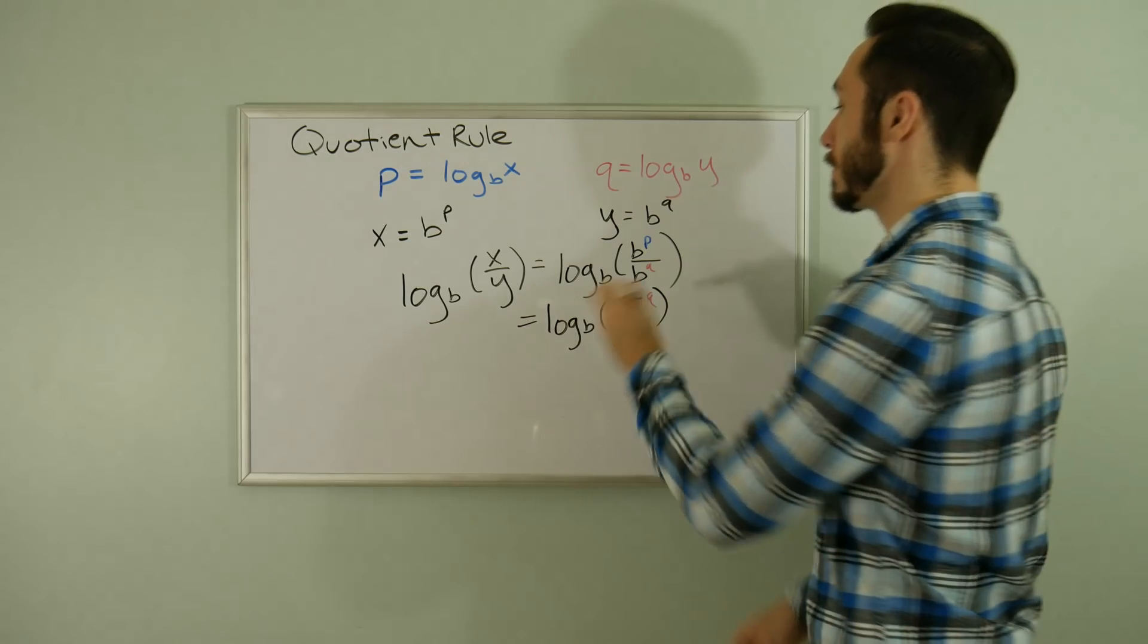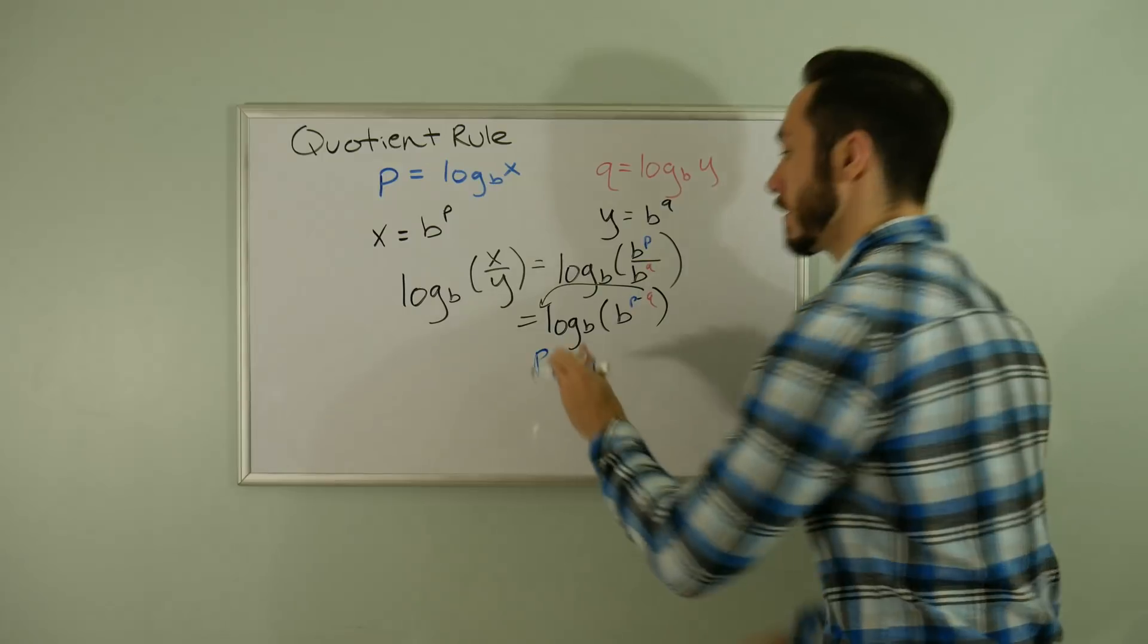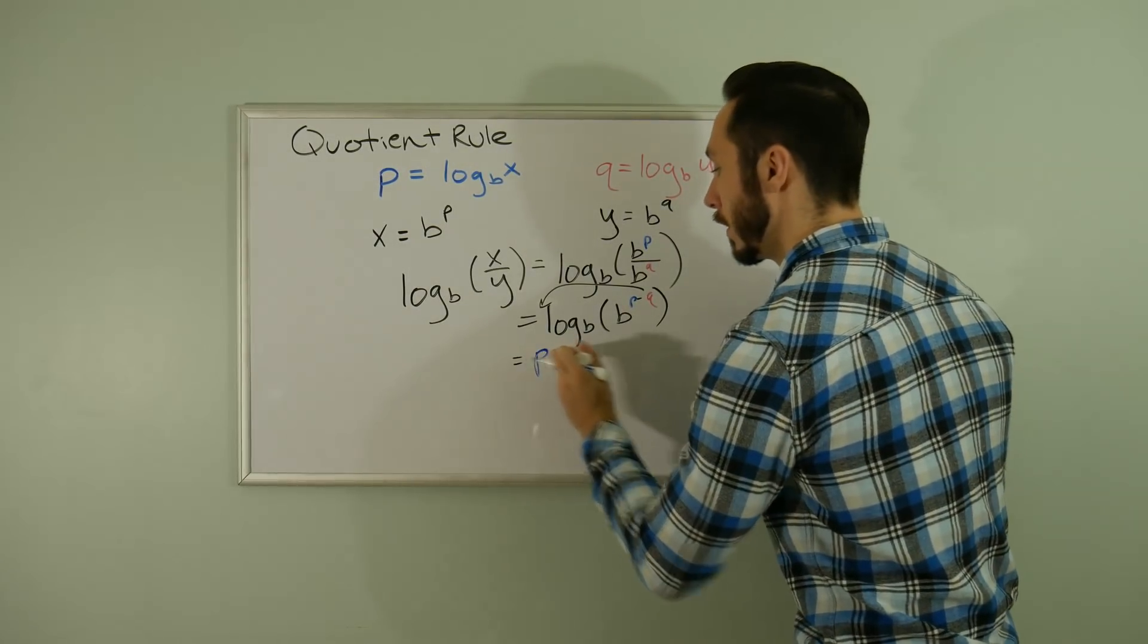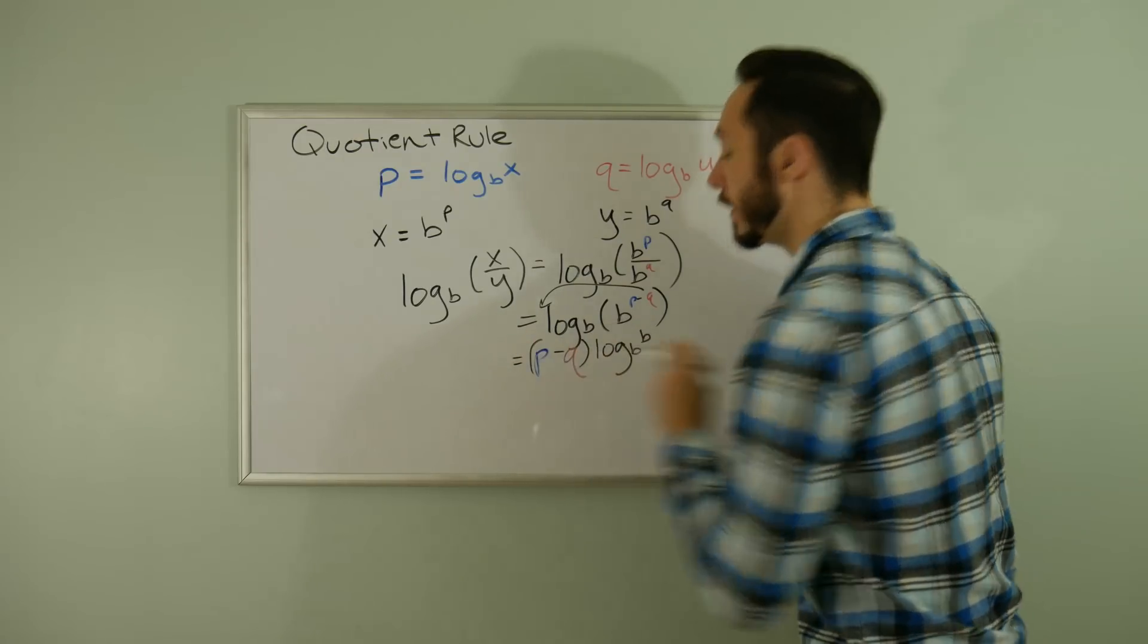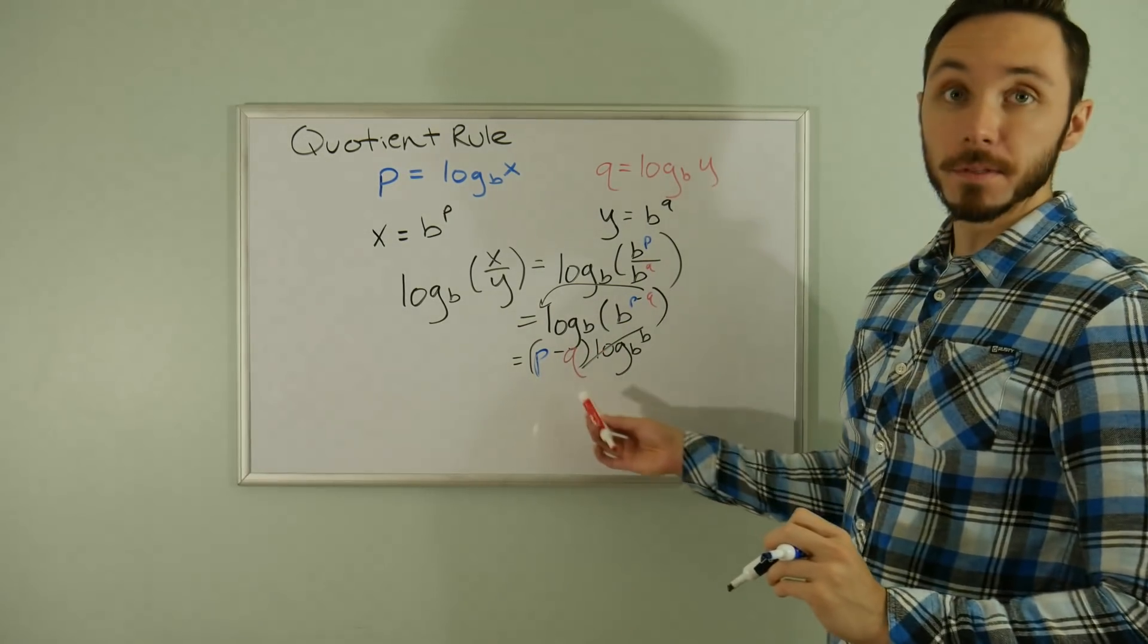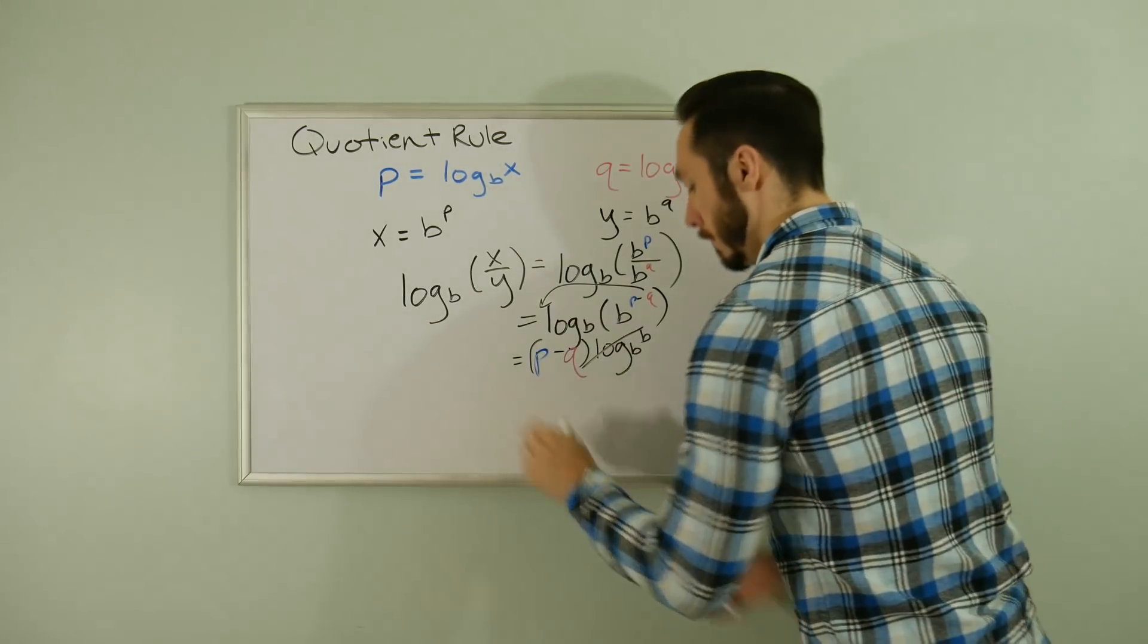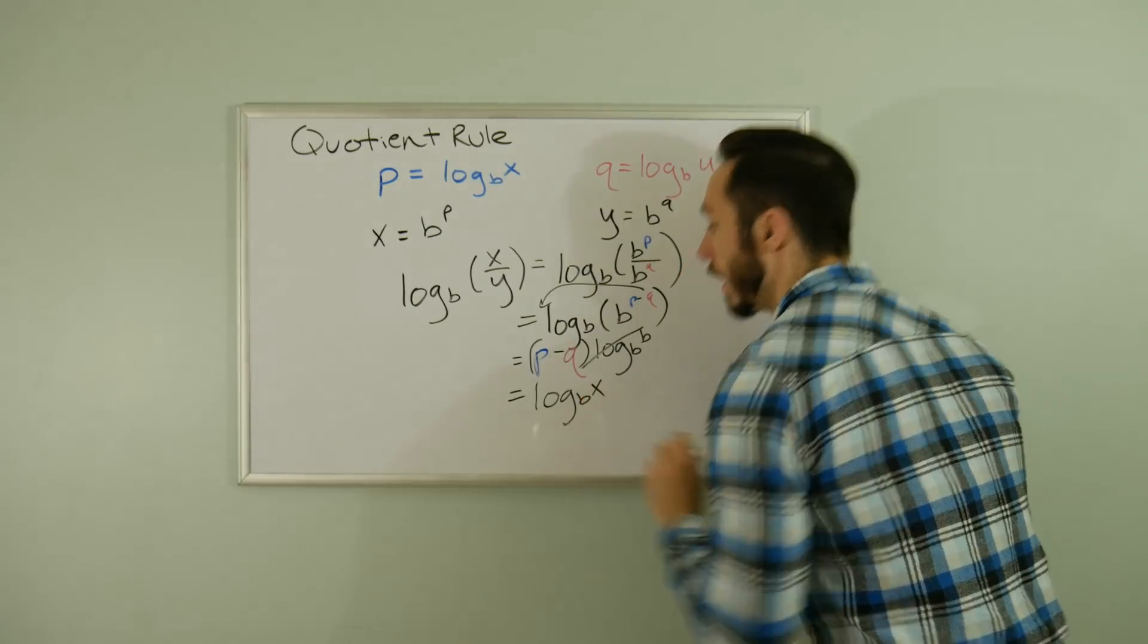Lastly, this behaves the same as before. I can swing this P minus Q up front and I end up getting a similar setup to the product rule proof. Same story - log base B of B is going to cancel.